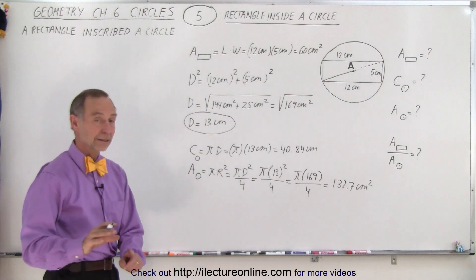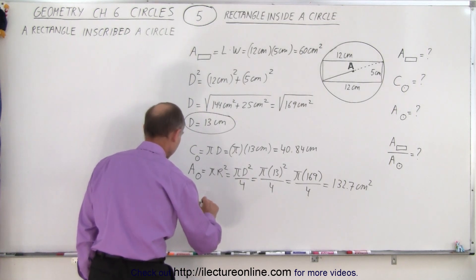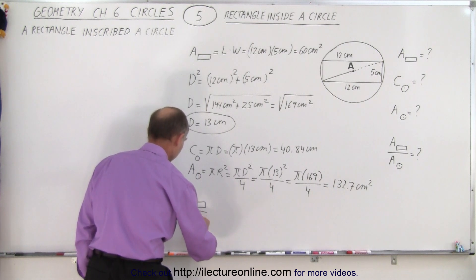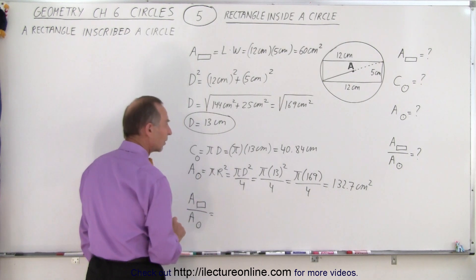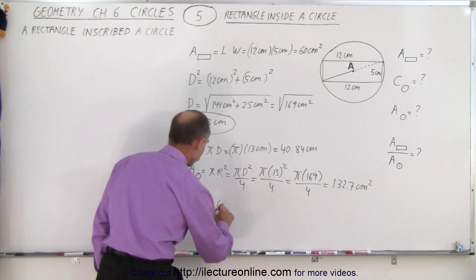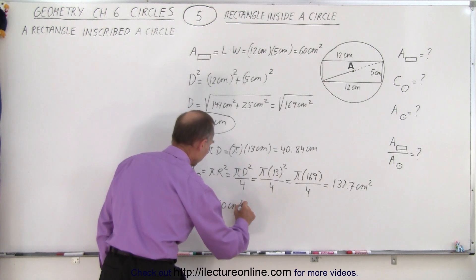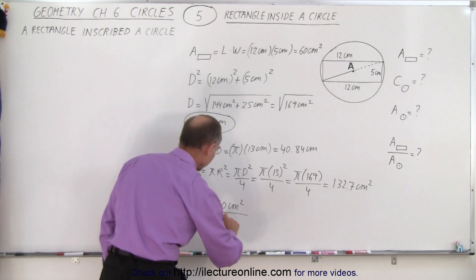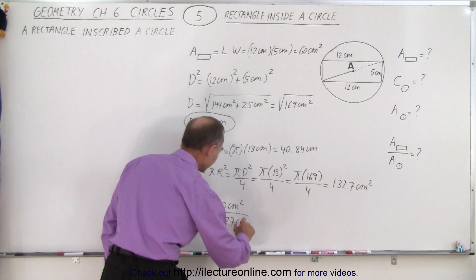And then finally, we'll get the ratio of those two. So the area of the rectangle divided by the area of the circle. That is equal to 60 centimeters squared divided by 132.7 centimeters squared.